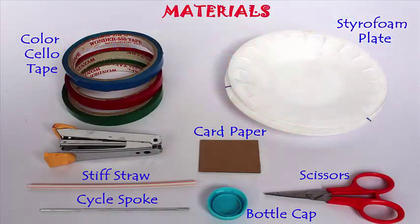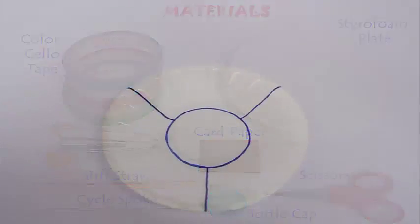You will also need a bottle cap, stiff straw, cycle spoke, card piece and a scissors.